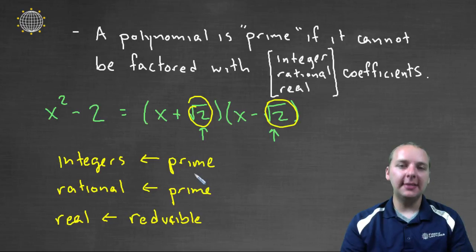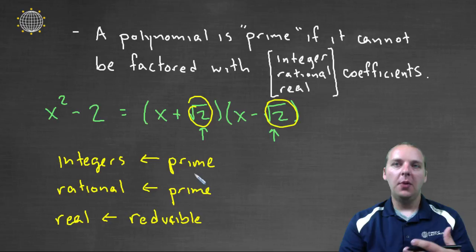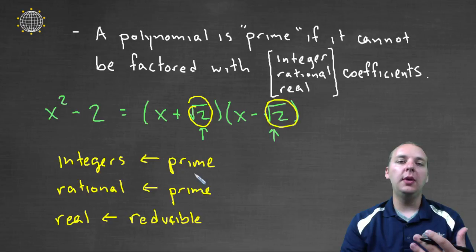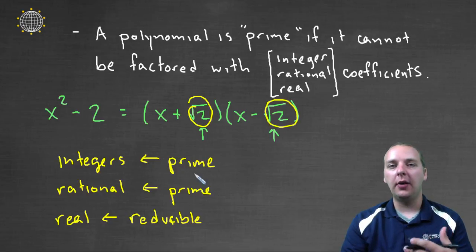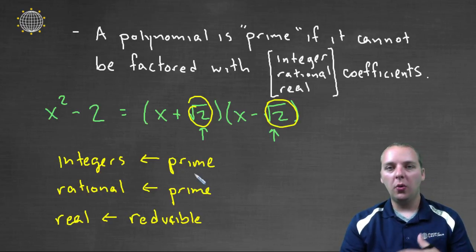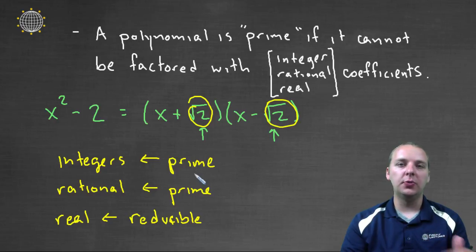So anyways, basically the easy definition of prime means not able to be factored. But you just have to be a little bit clearer with your instructions about what do you mean by factored form? Are we allowed just integers, or rational numbers, or just real numbers?